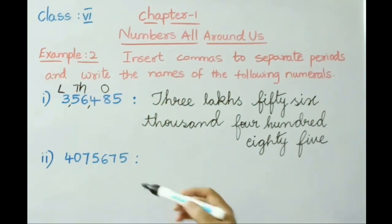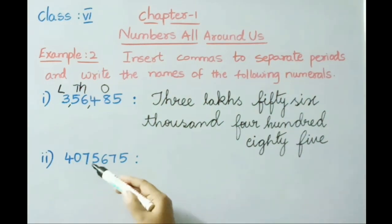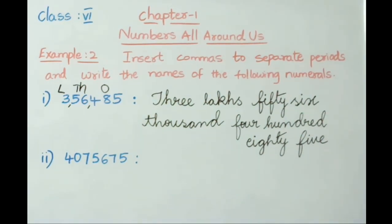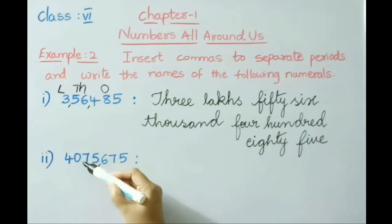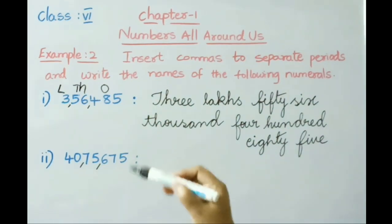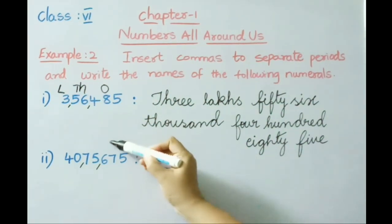See the second one: 4075675. Now we need to separate this number by commas. First three digits, then after that, two and two digits separated with comma.